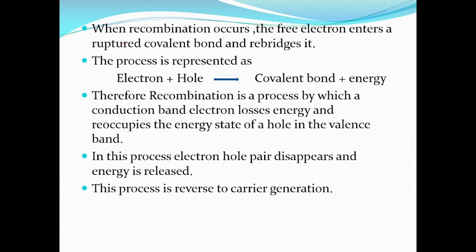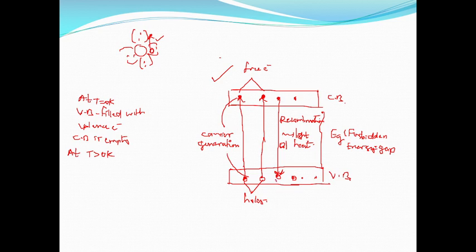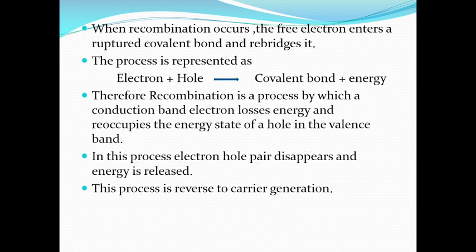When recombination occurs, the free electron enters into the ruptured covalent bond — it reoccupies its state of hole, coming back to its covalent bond, rebridging its structure. So electron plus hole recombine to give a covalent bond and excess energy is released. This excess energy is released in the form of light, meaning a photon, or heat.